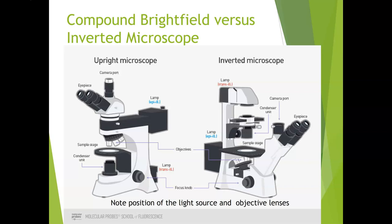This image compares the normal laboratory microscope — the compound brightfield — with the inverted phase contrast microscope. In the upright brightfield, the objective lenses are above the specimen on the stage, and the light source and condenser are below the specimen on the stage. The inverted scope has the light source and condenser located above the stage, and the objective lenses are below the stage. These differences are key to the different applications: the upright brightfield is used for stained slides, but the inverted is used for living cells in vessels placed on the stage.